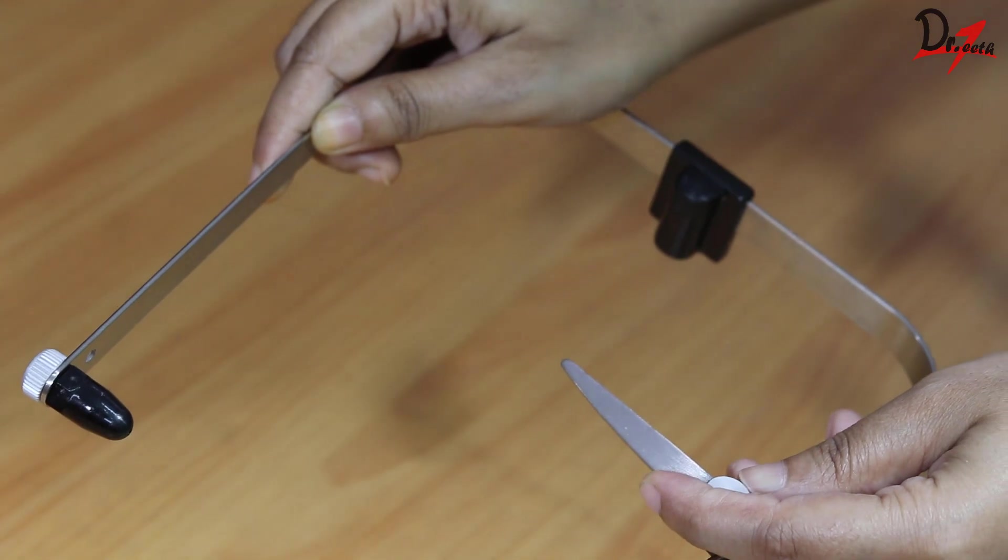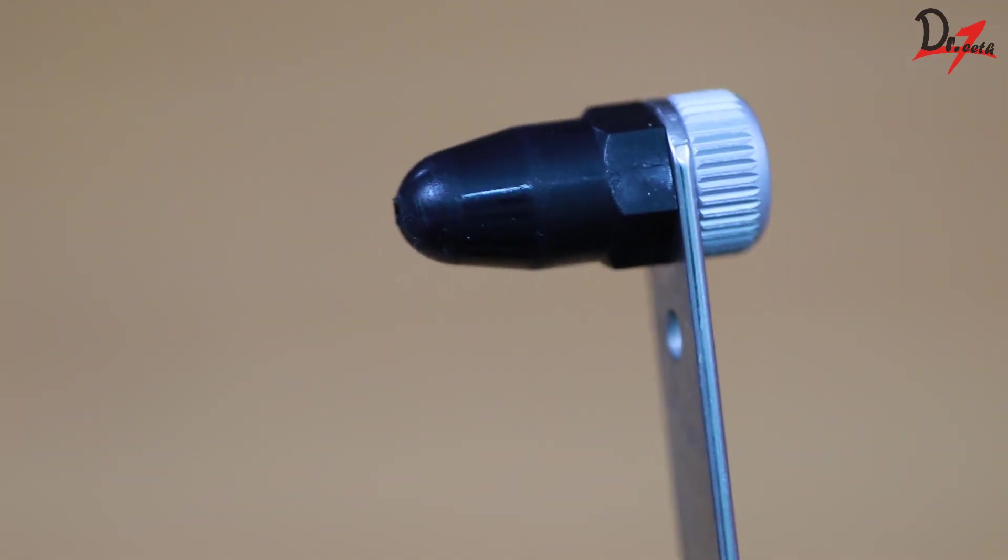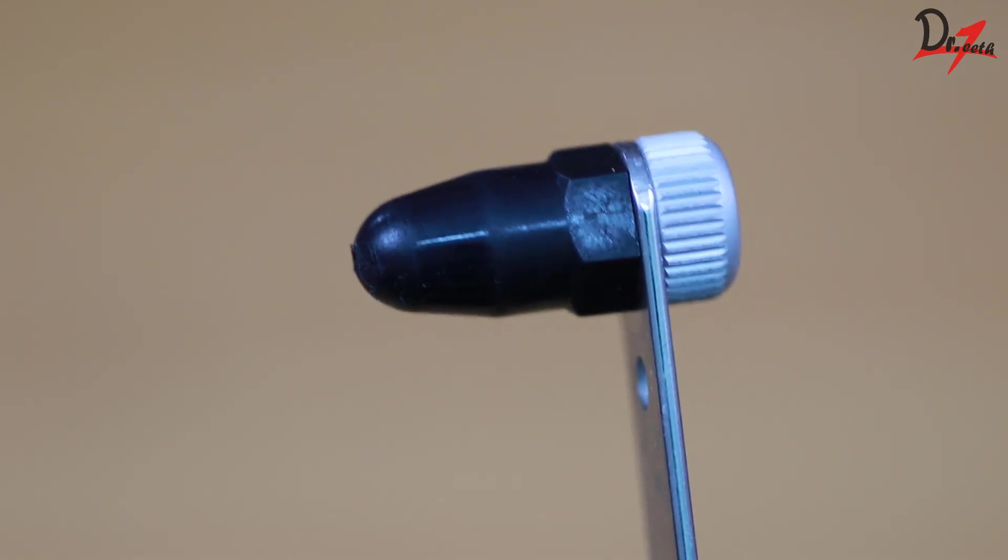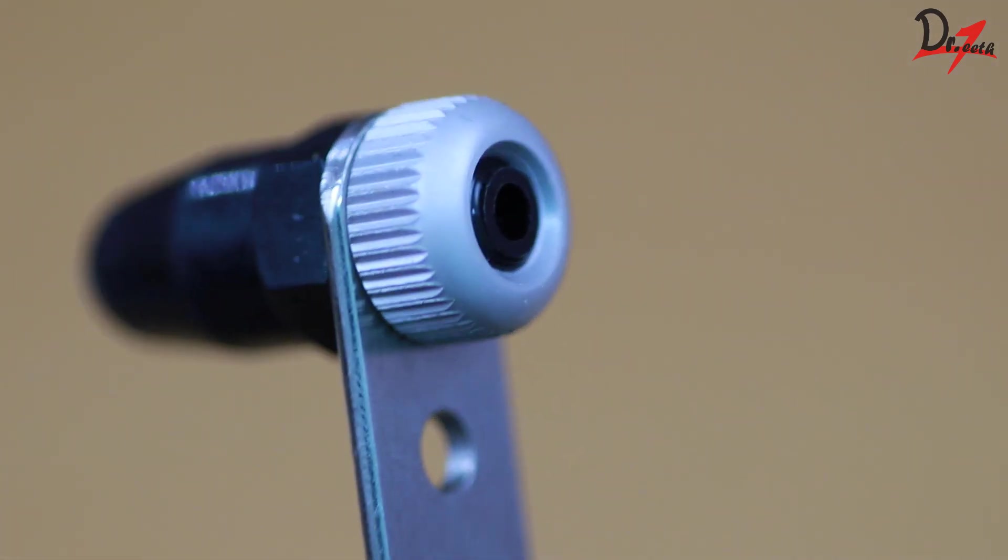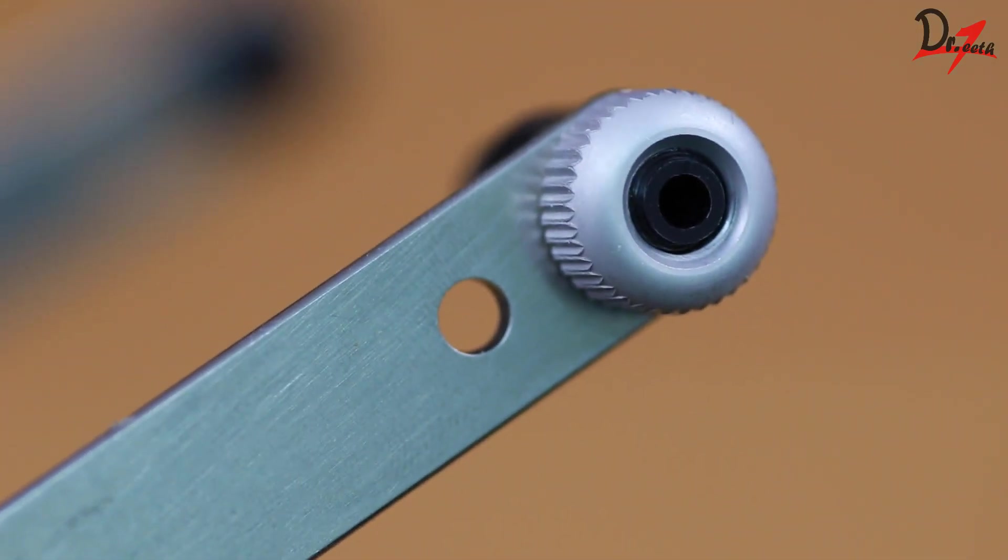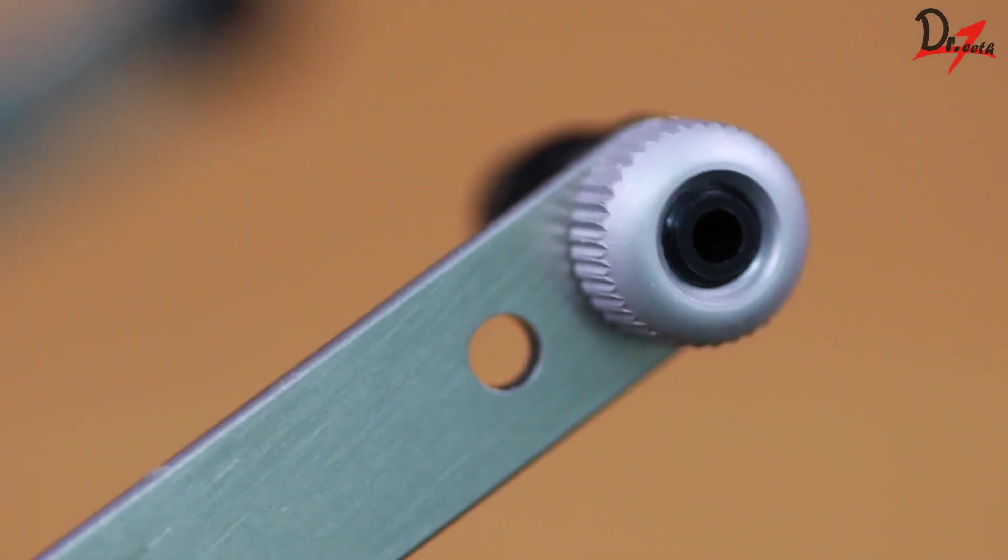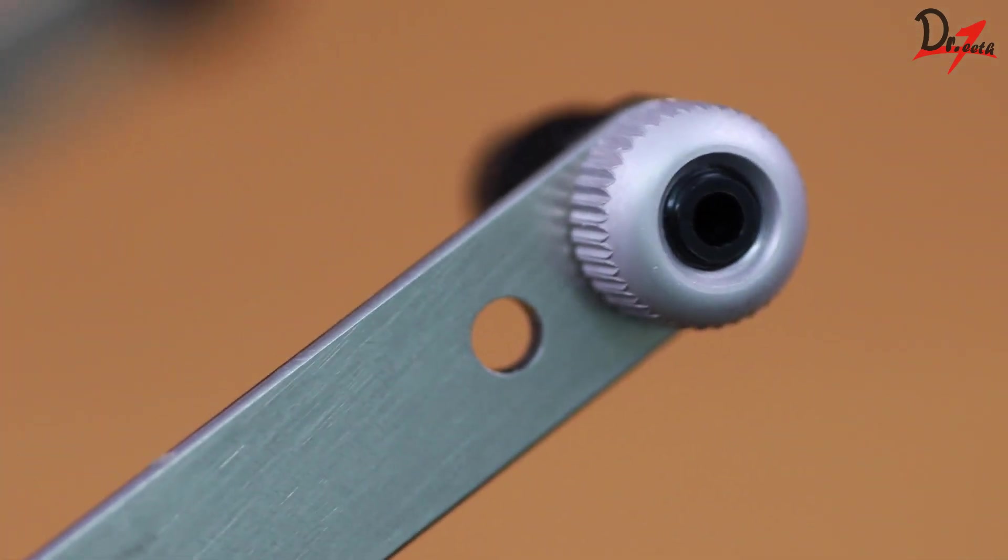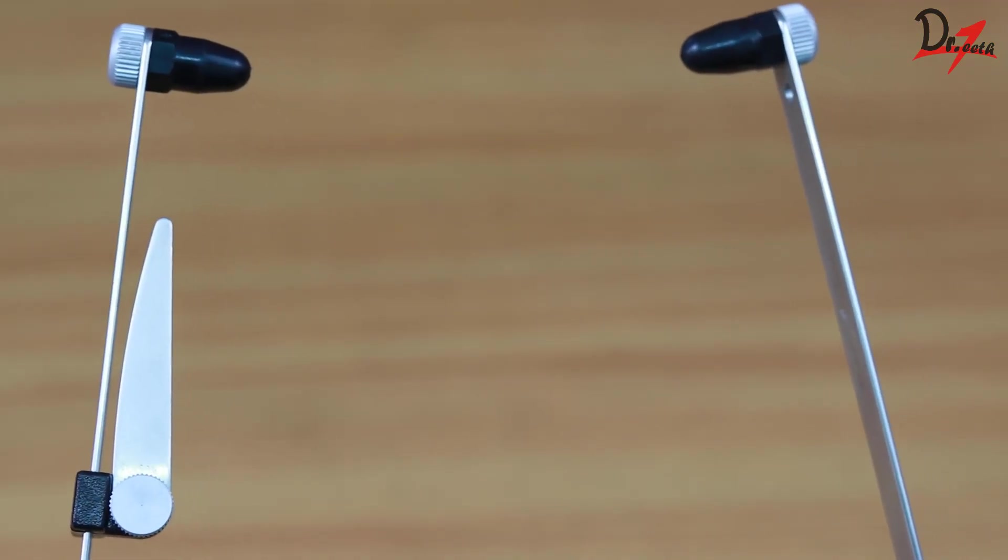Now in this design, we have an earpiece, as you can see here, which fits into the external auditory meatus of the patient. We also have this little hole in front of the earpiece, which denotes the true hinge axis. So in this face bow, we're not locating the true opening or hinge axis of the TMJ. Instead, we're using the earpiece as a reference.